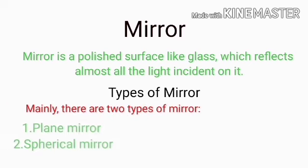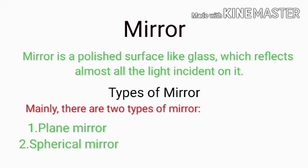Mirror is a polished glass surface. The reflection is done in the mirror. The main types are plane mirror and spherical mirror.